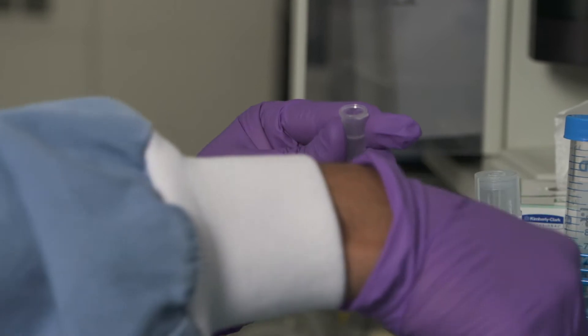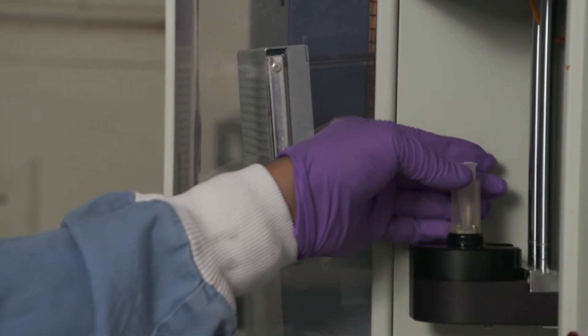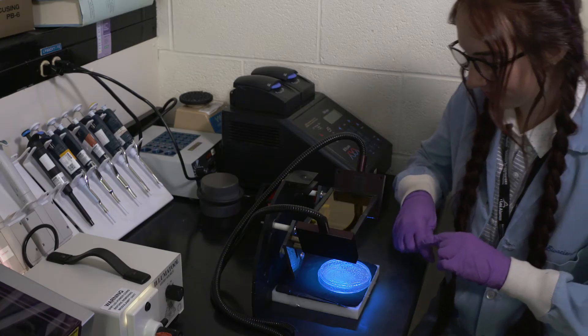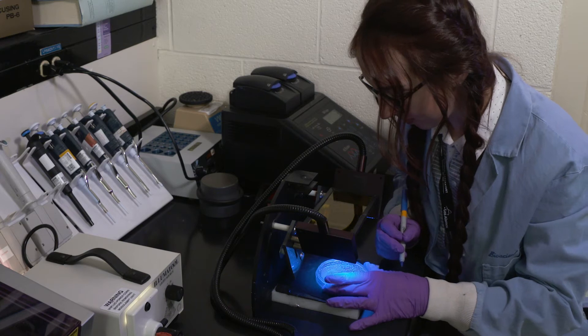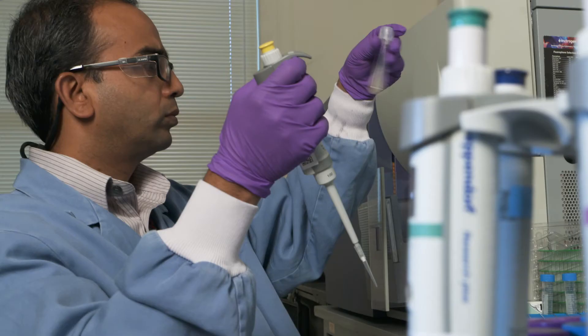With fluorescence activated cell sorting, we can screen a million variants of a biocatalyst in less than three hours. This approach for biocatalyst screening is the highest throughput of any of this type of technology on the market. And it's agile. We can develop biocatalysts for many different applications.